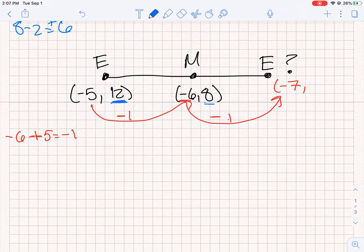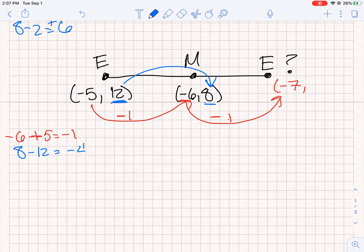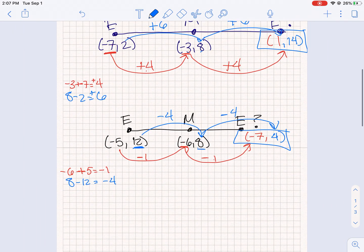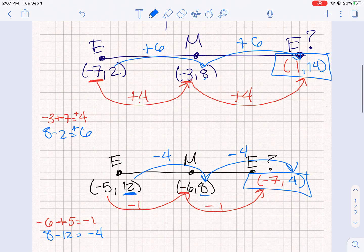So then, let's look at our y's. How do you get from 12 to 8? Well, if I do 8 minus 12, I should see that's -4. I'm minus 4. So now, we're going to do 8 minus 4, which gives me 4. So the coordinates for the missing endpoint are (-7, 4). Hopefully, this little video helps you find the missing endpoint.